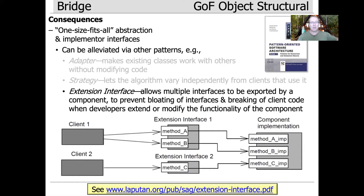Yet another pattern worth knowing about is the extension interface pattern, which deliberately takes on the issue of one-size-fits-all interfaces head on. It makes it possible to define new interfaces and then have a protocol on the client side for negotiating which interface you actually want to use. Rather than forcing everything into a single unchanging interface, extension interface allows modifying interfaces in a very stylized way. This was popularized in the mid-to-late 90s by a technology called COM — component object model from Microsoft — and it can be very helpful for controlled evolution of interfaces.